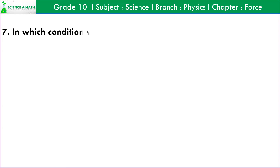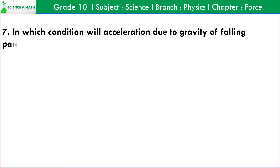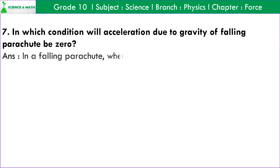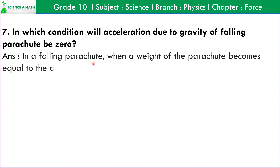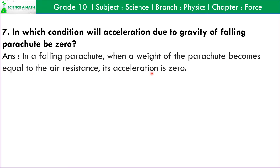Question number 7: In which condition will the acceleration due to gravity of a falling parachute be zero? Answer: In a falling parachute, when the weight of the parachute becomes equal to the air resistance, its acceleration is zero.